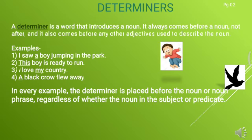This boy is ready to run — 'this' is the determiner, 'boy' is the noun. I love my country — 'my' is the determiner, 'country' is the noun. A black crow flew away — 'a' is the determiner, 'black' is the adjective, 'crow' is the noun. In every example, the determiner is placed before the noun or noun phrase, regardless of whether the noun is in the subject or predicate.